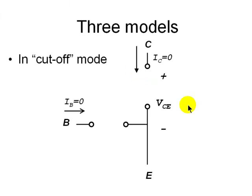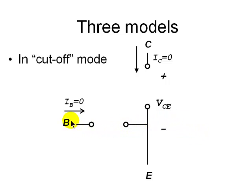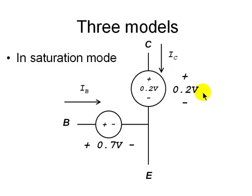In cutoff mode, the equivalent circuit is even simpler: an open circuit between the base and the emitter, and another open circuit between the emitter and the collector.